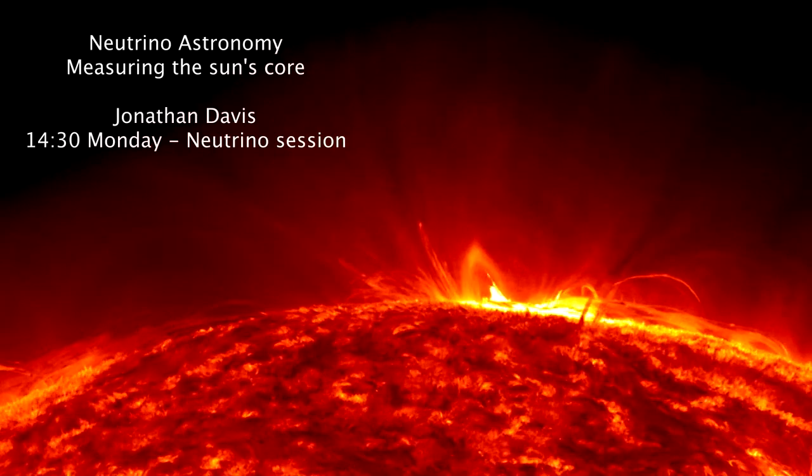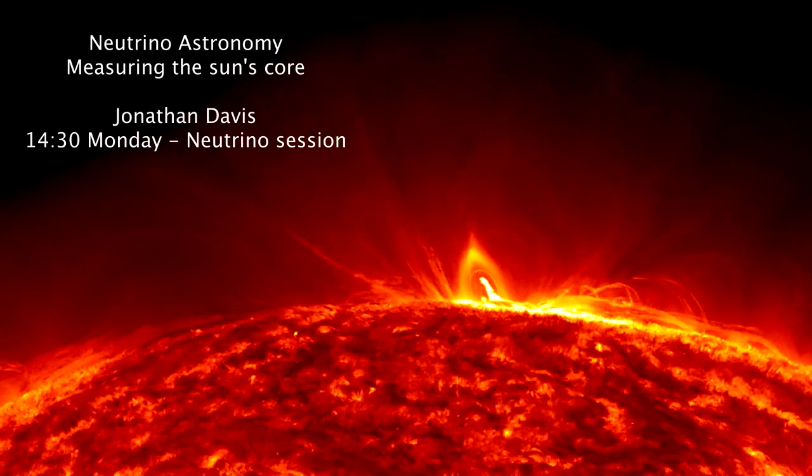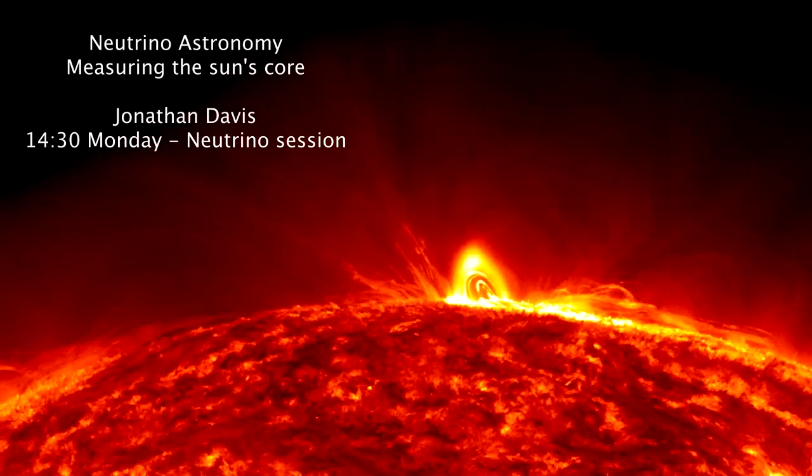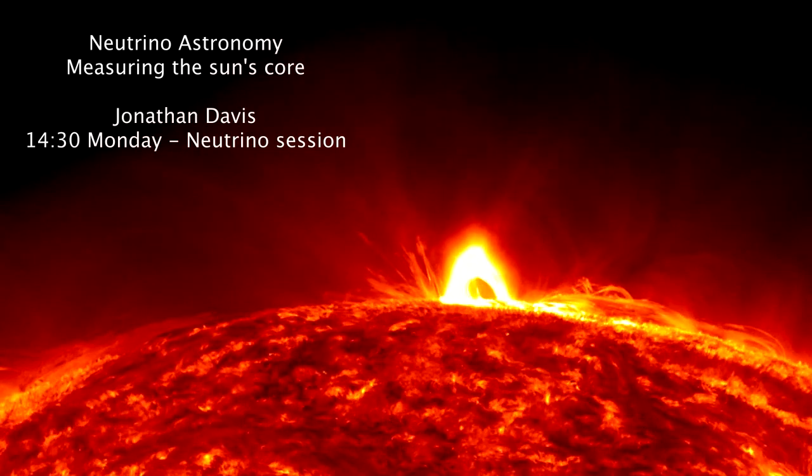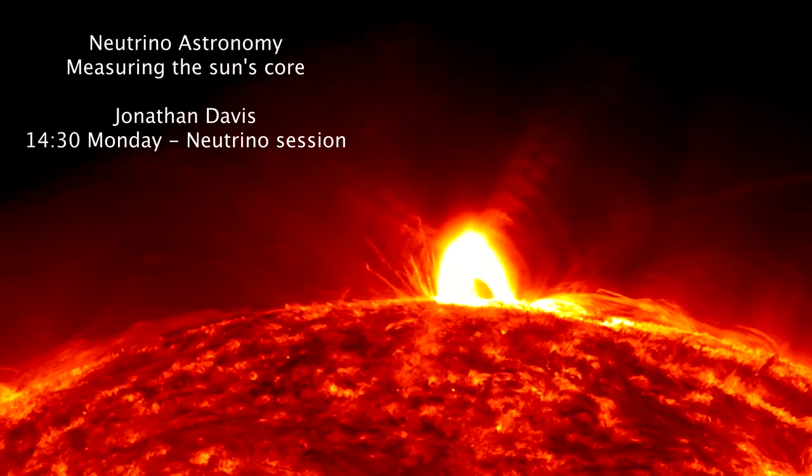My talk is about using neutrino experiments as telescopes to make precision measurements of the Sun's core. We know surprisingly little about the Sun's core. Theoretical models backed up by helioseismology say that it should be about 20% of the solar radius.